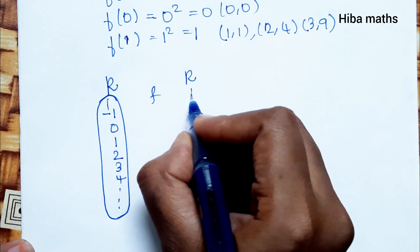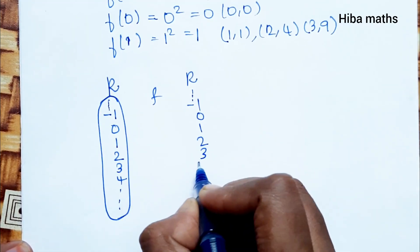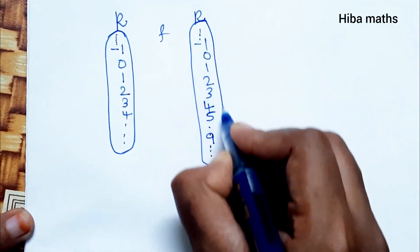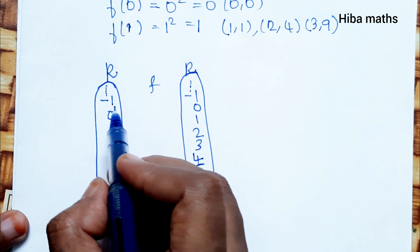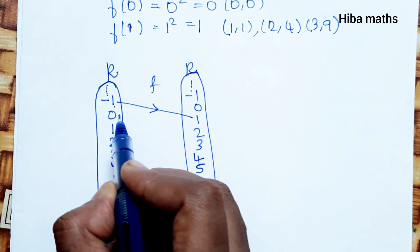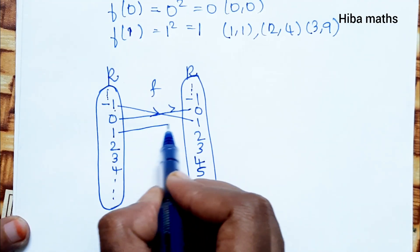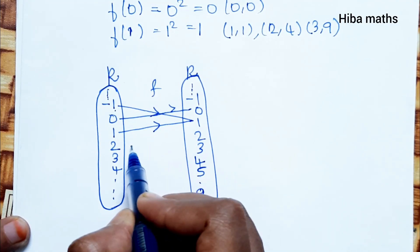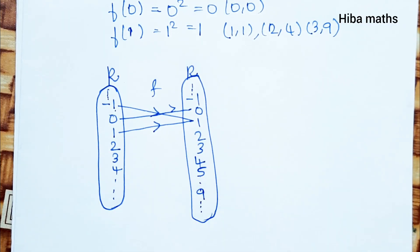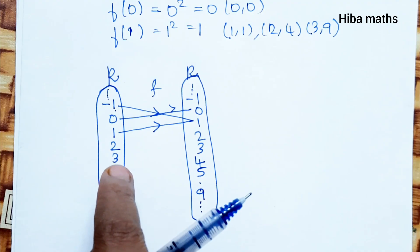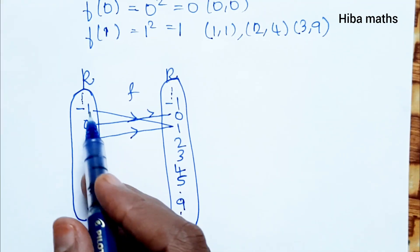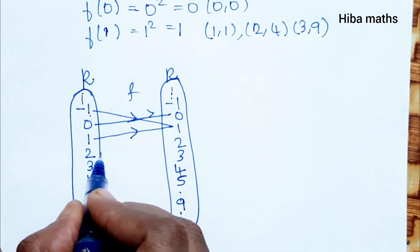Continuing the calculations: f(0) = 0, f(1) = 1, f(2) = 4, f(3) = 9, f(4) = 16, f(5) = 25, and it goes on. We observe that f(1) = 1 and f(−1) = 1 — that is, two different elements (1 and −1) have the same image. So this is not a one-to-one function, as two elements share the same image.